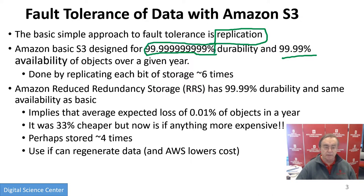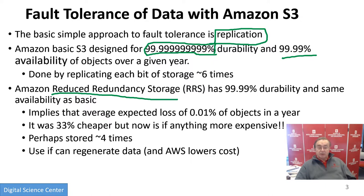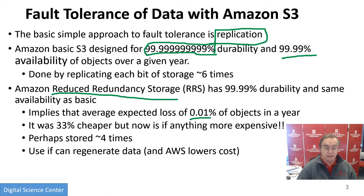And you just replicate every bit of the storage. Now, it's amusing that they introduced reduced redundancy storage, and it was in my notes. But if you actually go to the page, it's still there — but it's more expensive than the basic thing. Because the basic thing has gone down in price, and they've lost interest in reduced redundancy storage. Maybe it was too complicated, and probably the price reduction just wasn't worth people worrying about it. So this one has a slightly alarming number: 0.01%. That's quite a lot — if you have 10,000 objects, that's one. So that's too much loss. People don't really want that. And it used to be one-third cheaper; now it's roughly the same cost.